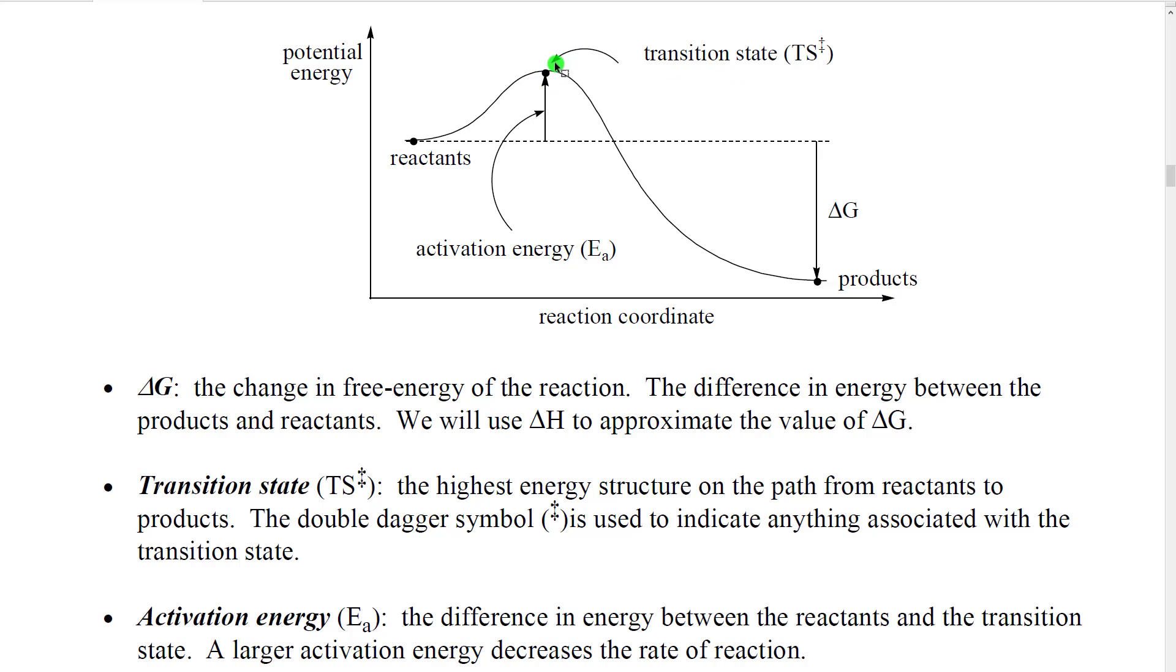That highest potential energy structure then is called the transition state. So it's the point on the curve that is at the highest energy, but remember on this axis that it's aligning with, it's a specific structure. So it represents the structure that's on that path from reactants to products that has the highest energy.